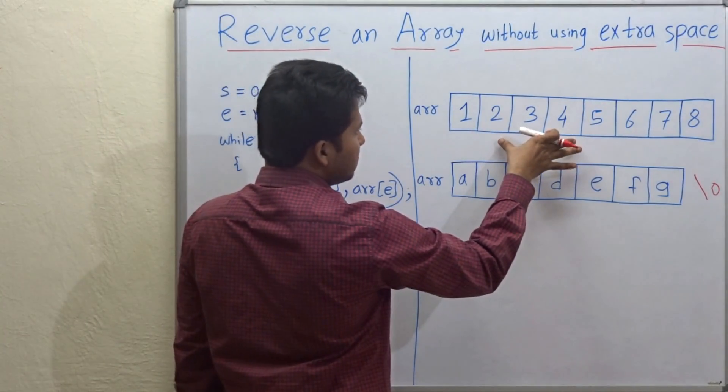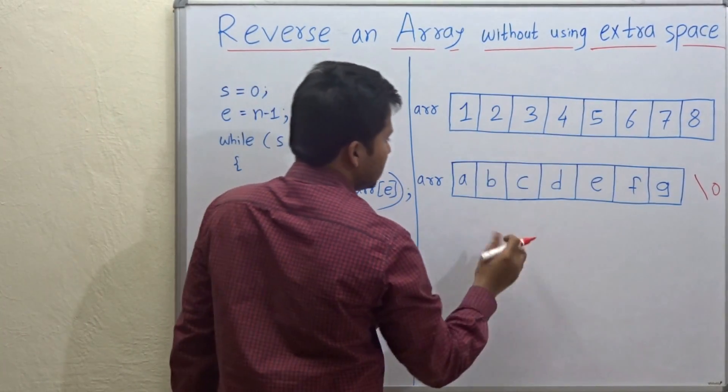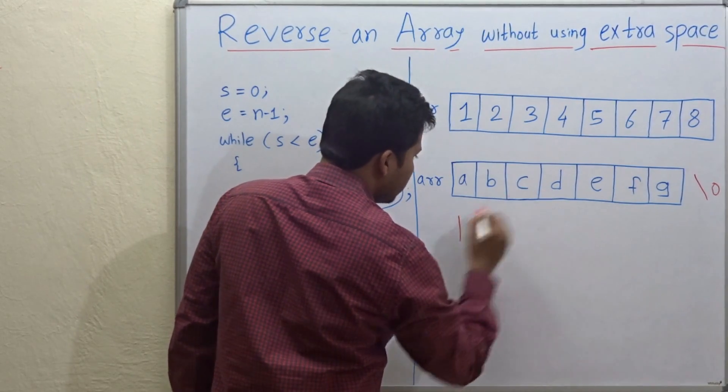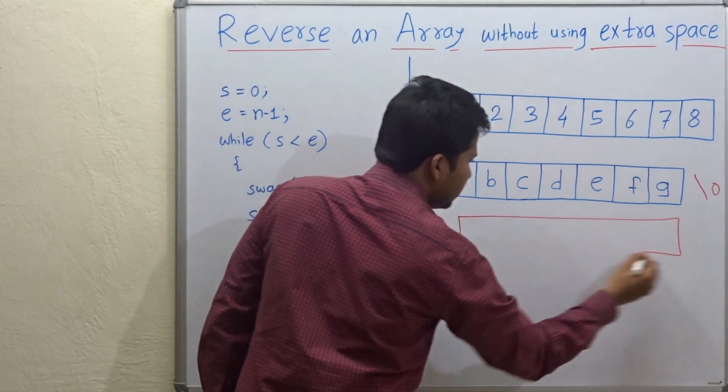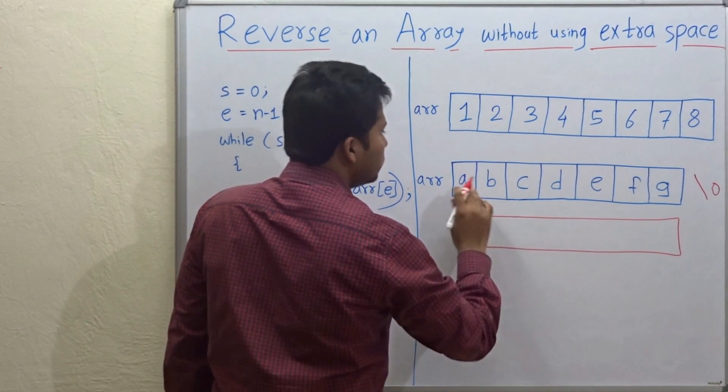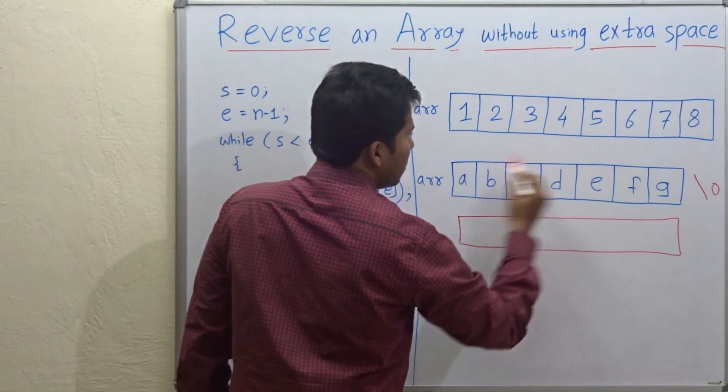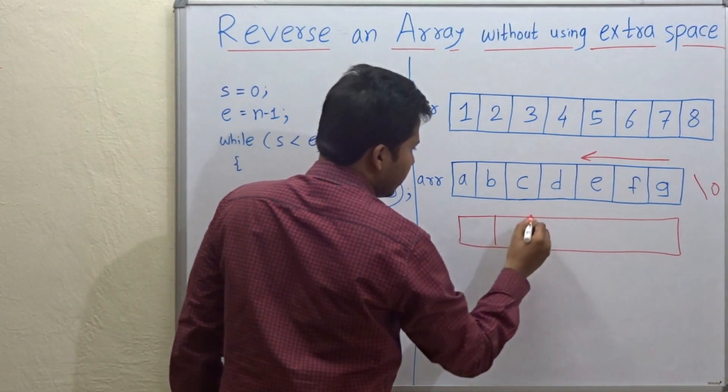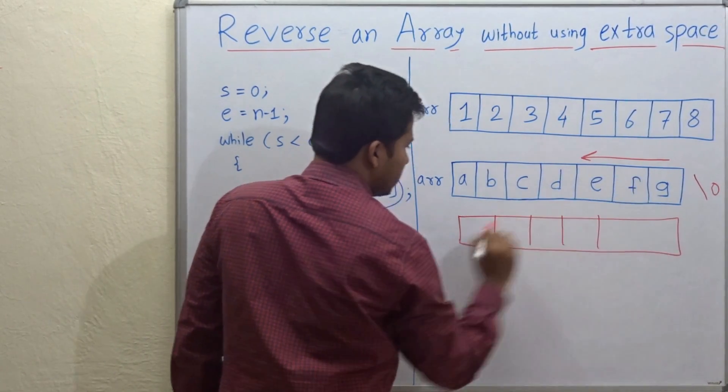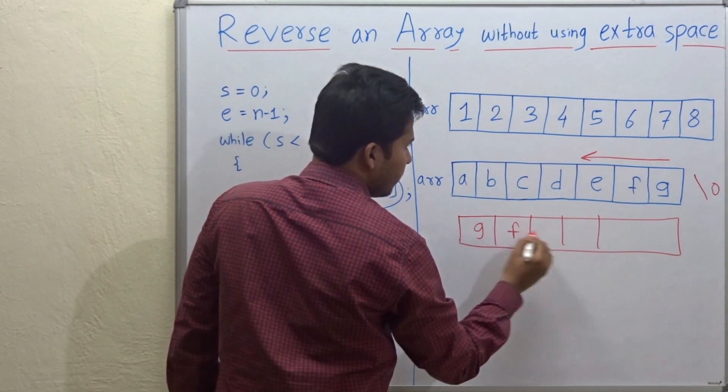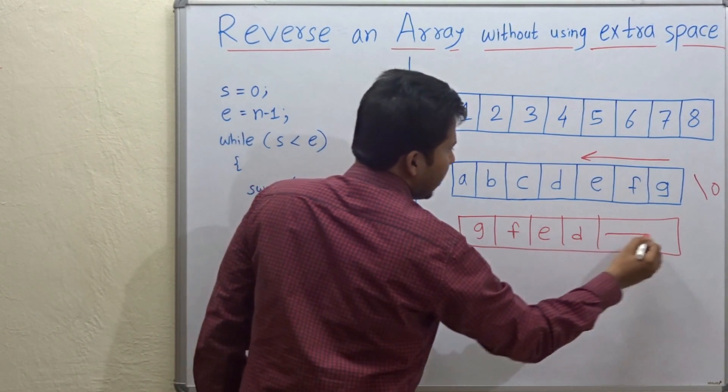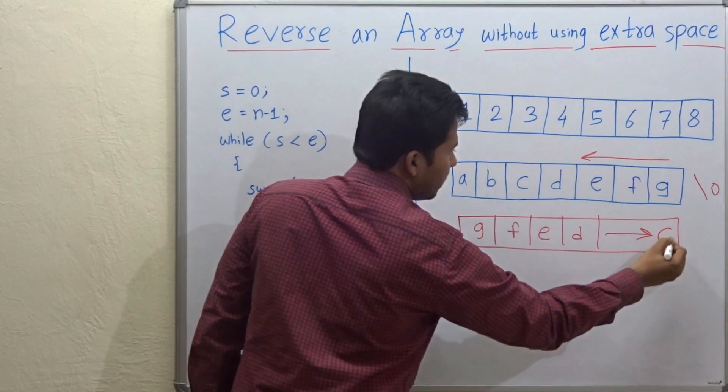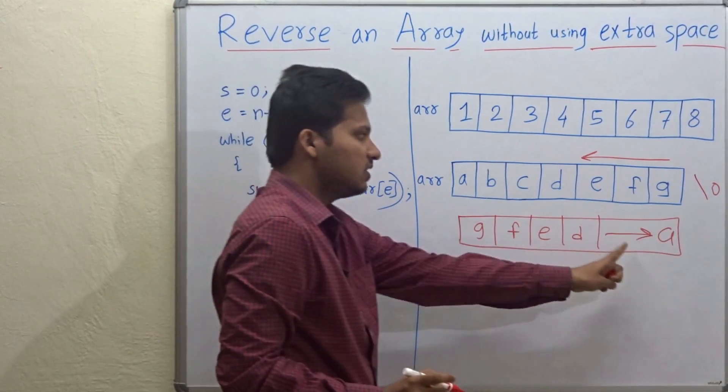We know a method by using extra space. Suppose you want to reverse this array, then you can use another memory and you can just put all the elements from the end of the array in the new array like G, F, E, D and so on up to A. So this will be the reverse.